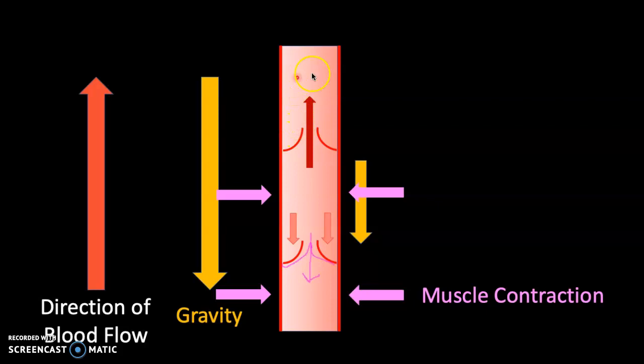All right, well that's fantastic. So now the blood is in this section of the valve. And that's great until gravity, once again, starts pushing the blood back down towards the ground and the blood collects in between or behind those two valve flaps.